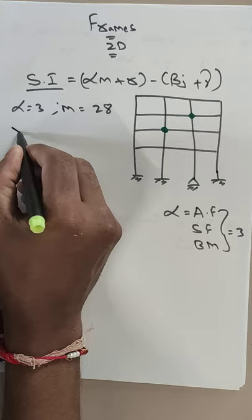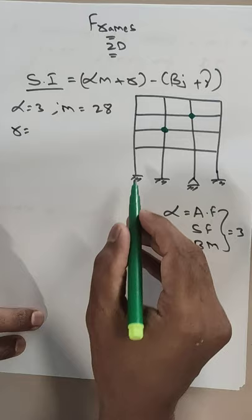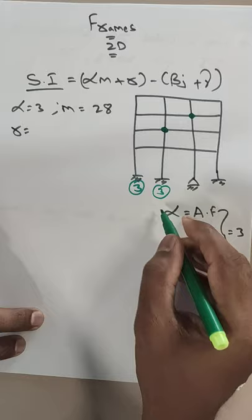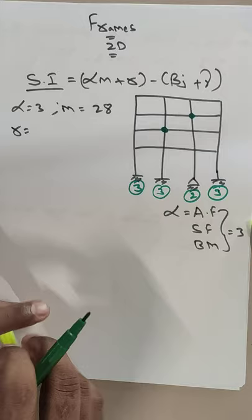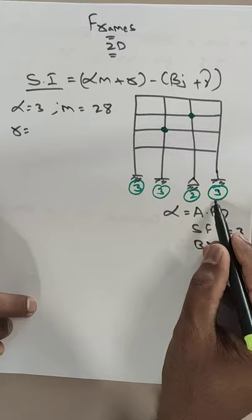Now r is the number of reactions. For the first fixed support we have 3 reactions, for the second fixed support we also have 3, for the third fixed support we have 3 more, and the remaining support gives 2. So total reactions: 3 plus 3 is 6, plus 3 is 9, plus 2 gives us 11. Total number of reactions r is 11.